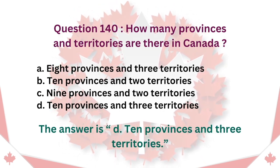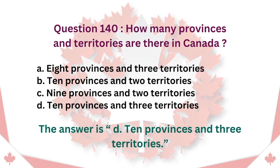Question 140: How many provinces and territories are there in Canada? A. 8 provinces and 3 territories. B. 10 provinces and 2 territories. C. 9 provinces and 2 territories. D. 10 provinces and 3 territories. The answer is D. 10 provinces and 3 territories.